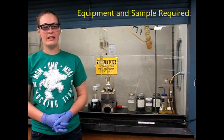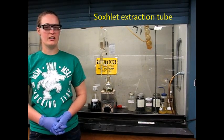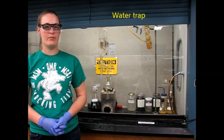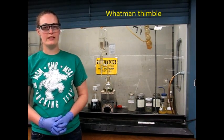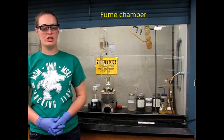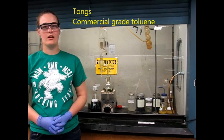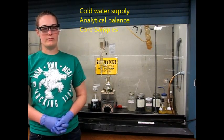The equipment and sample requirements are the Soxhlet extraction tube, the Liebig condenser, a water trap, 500 milliliter boiling flask, the Whatman thimble, electric heater, fume chamber, tongs, commercial grade toluene, cold water supply, analytical balance, and core samples.